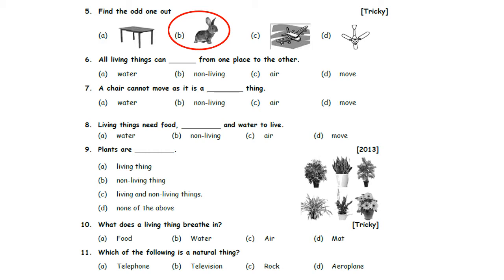Question six: All living things can _____ from one place to the other. Option A: Water. Option B: Non-living. Option C: Air. Option D: Move. We know all living things can move from one place to the other. So, Option D is the correct answer.